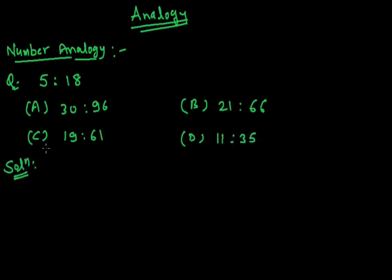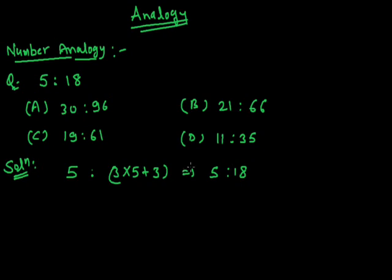Here we see the solution. In the given pair 5, 18, the relationship is 3 × 5 + 3 = 18. The same relationship holds in option B: 21. Three multiplied by 21 plus 3 — that is, 3 × 21 + 3 = 66. So the answer is option B: 21, 66.